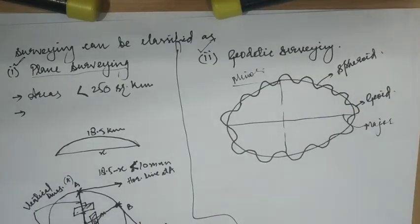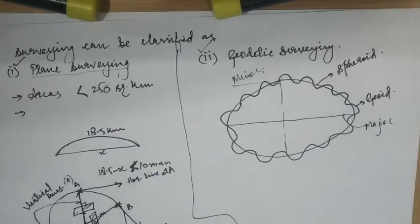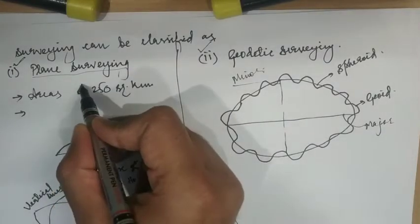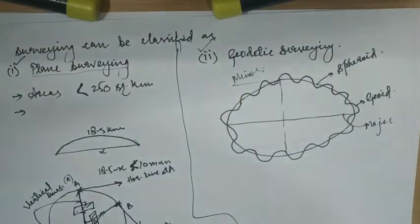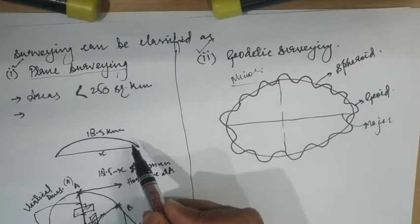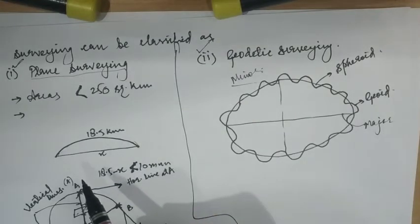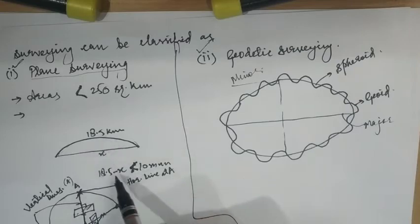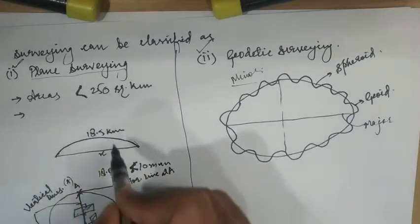An important question arises: where can we use plane surveying? Plane surveying can be safely used when one is concerned with small portions of the earth's surface and the areas involved are less than 250 square kilometers. Secondly, the difference between the arc distance of 18.5 km on the surface of the earth and the corresponding chord distance should be less than 10 mm — only then can we use plane surveying.